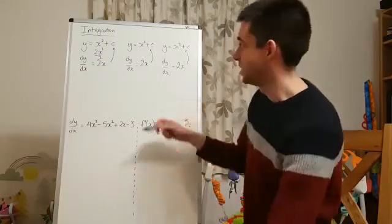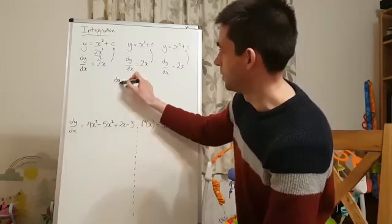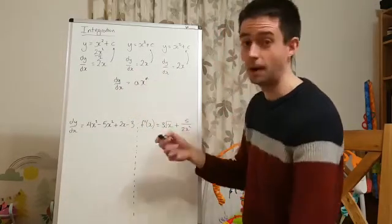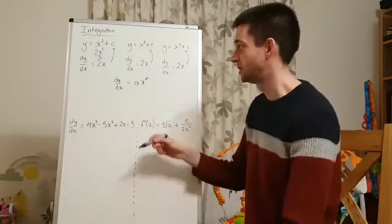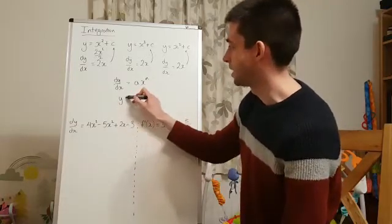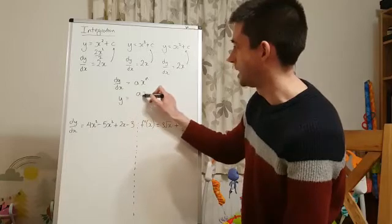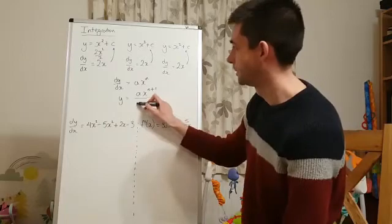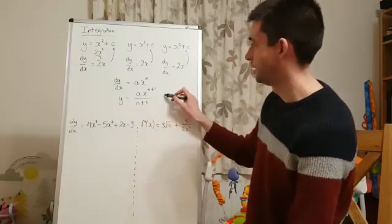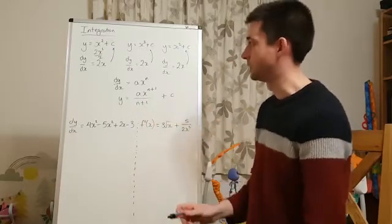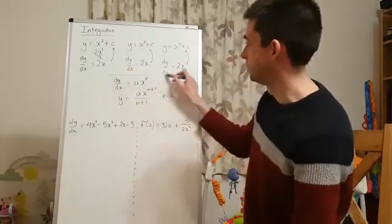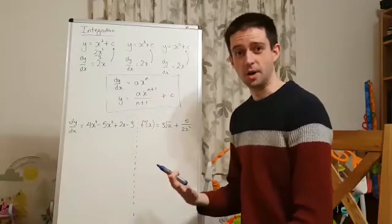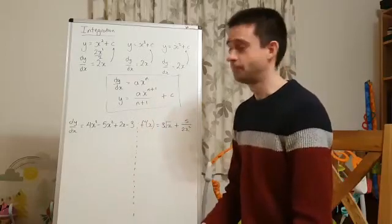So the general idea, then, is if we have dy by dx in index form, number x power, that's what we looked at in the first part of this lesson. Then to integrate, to get y, we would have ax to the power of n plus 1, adding 1 to the power, over n plus 1, and not forgetting, plus c on the end. So that is the crucial bit, that is how to do integration for expressions in this form, equations in this form.